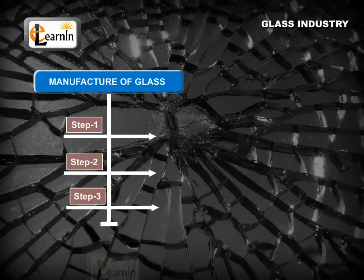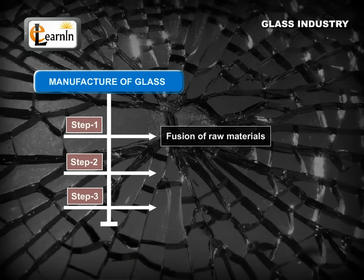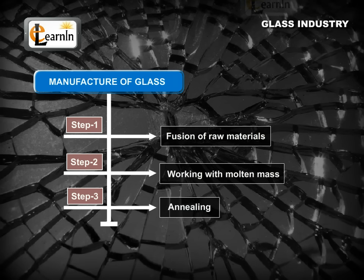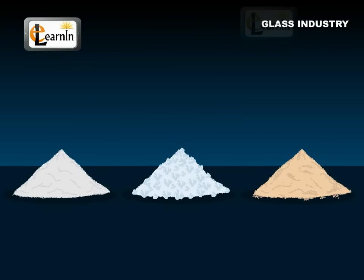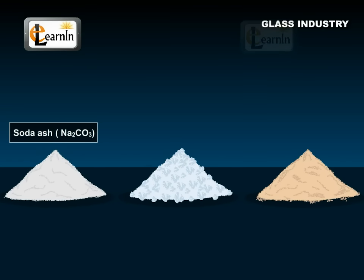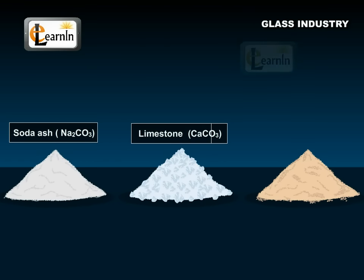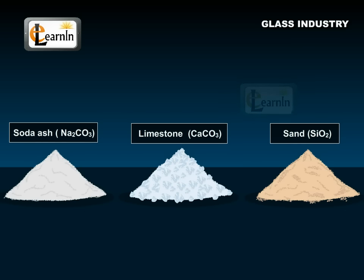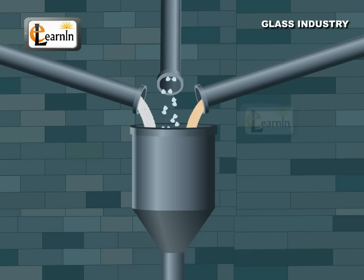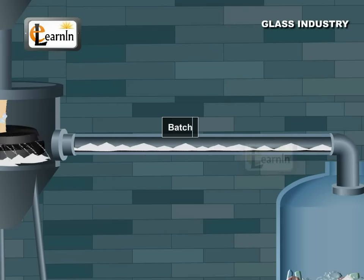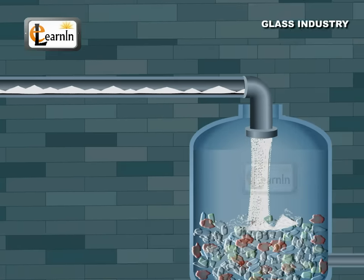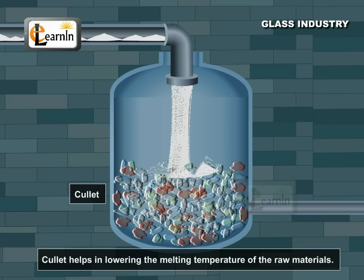Manufacture of glass. The manufacture of glass involves three steps: fusion of raw materials, working with molten mass, and annealing. The raw materials used for glass are soda ash (Na2CO3), limestone (CaCO3), and sand (SiO2). These materials are taken in required proportion and thoroughly mixed and ground to get a powder called Batch. Batch is mixed with some broken glass called Cullet. Cullet helps in lowering the melting temperature of the raw materials.